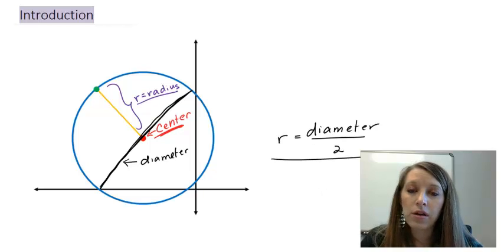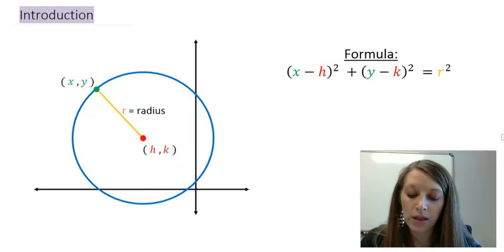So now that we know the key parts of the circle, let's figure out what the circle formula is. And it's given by this over here: (x - h)² + (y - k)² = r².